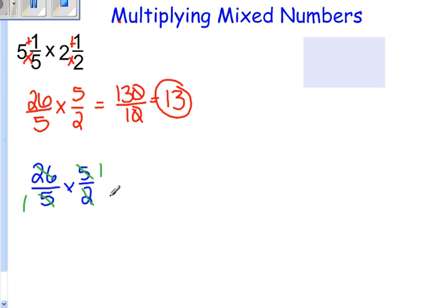26 and 2 can both be divided by 2. 2 divided by 2 is 1. 26 divided by 2 is 13. Now we multiply our new numerators and denominators together. Then we get 13 over 1, which is the same as 13.